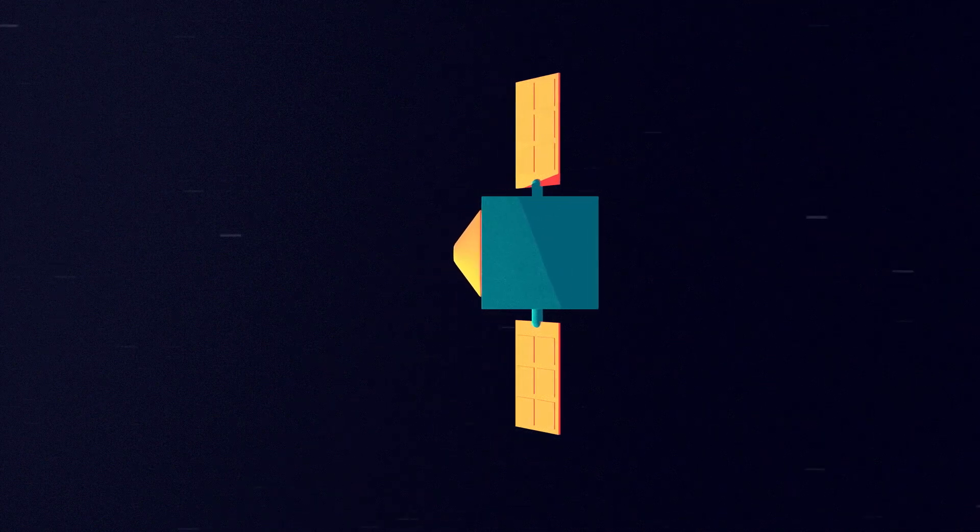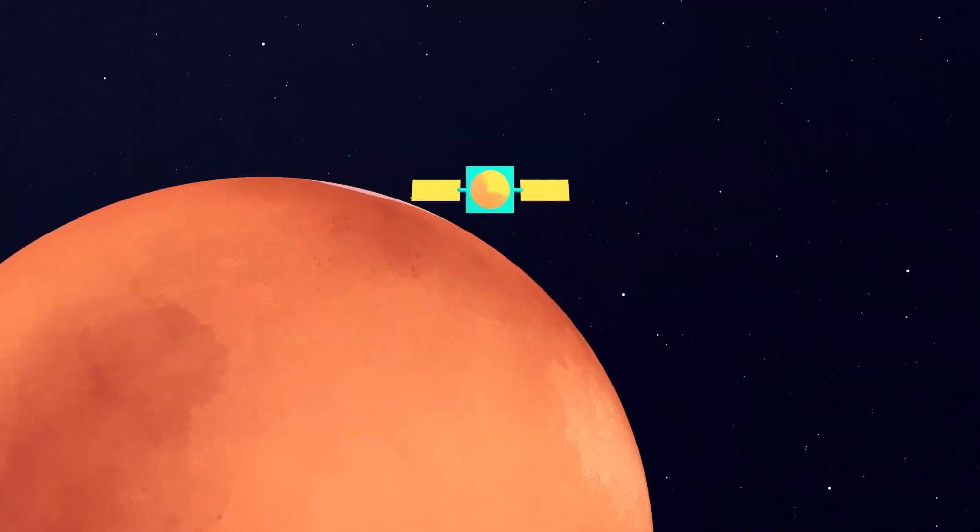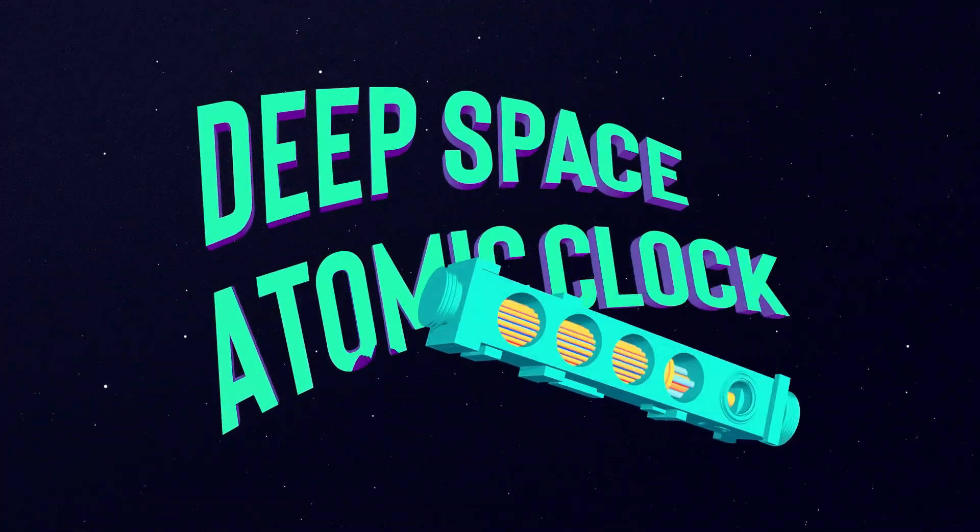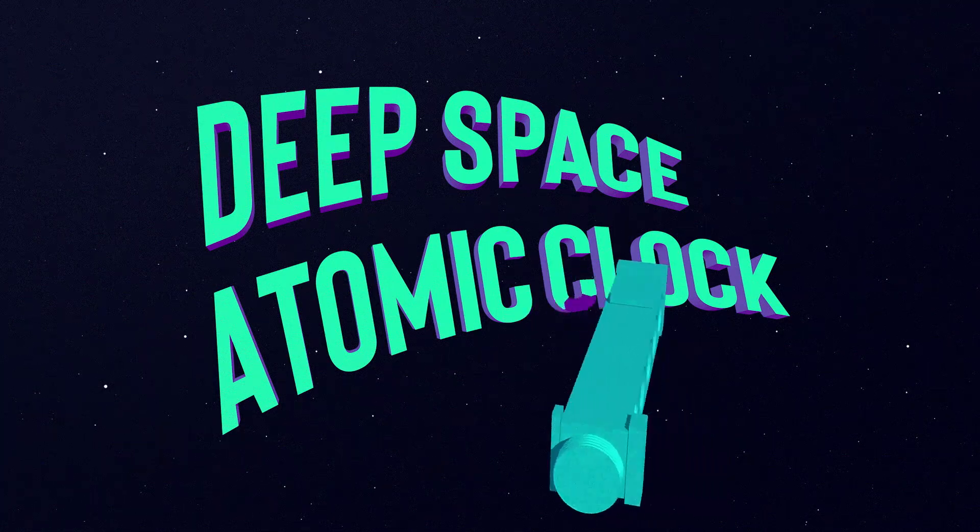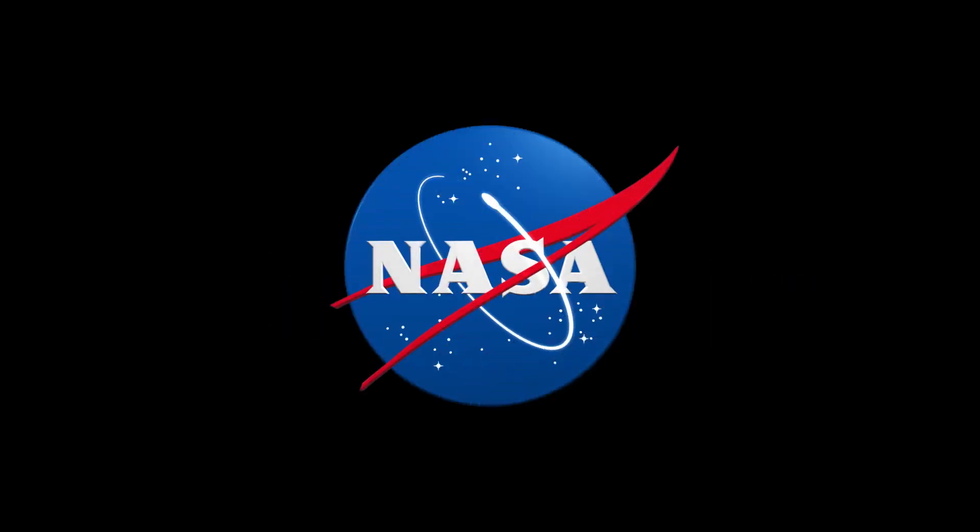The Deep Space Atomic Clock could one day let astronauts navigate safely and accurately to Mars and beyond. This technology demonstration is the first step in making one-way space navigation a reality.